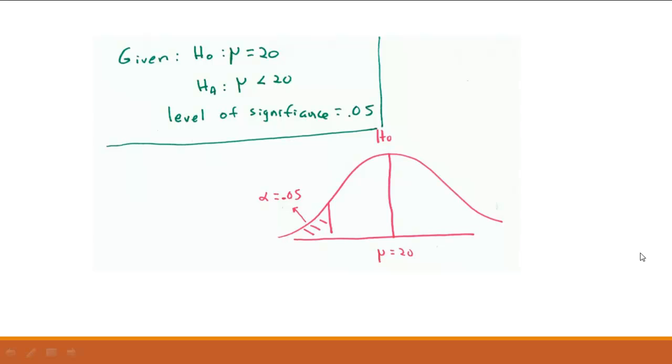So what I have drawn here is the distribution if HO is true. So I have a mean of 20 and since I'm going in the downward direction, look at HA is less than, I'm going to draw a line here and put .05, my level of significance, in the left hand tail. Again, that's because I have less than here.